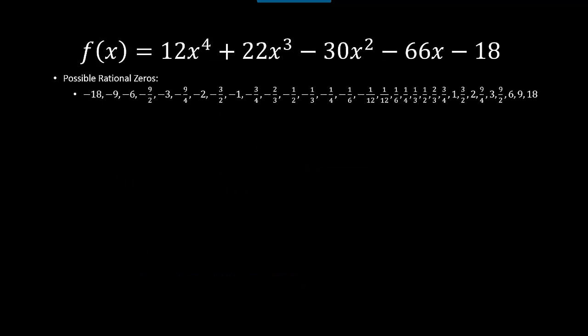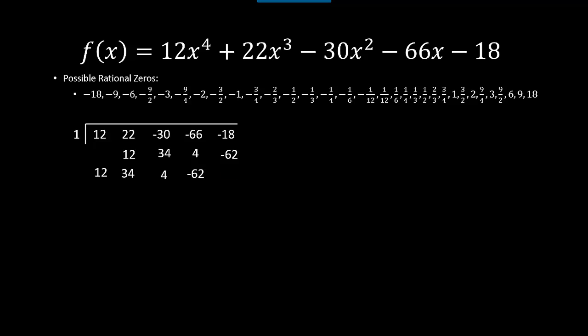Back to our example with 32 possible rational zeros — I'll start with 1. Synthetic division gives us a remainder of −80, so 1 is not a zero. Looking at the bottom row, the values are not all non-negative, so at this point we can only eliminate 1.